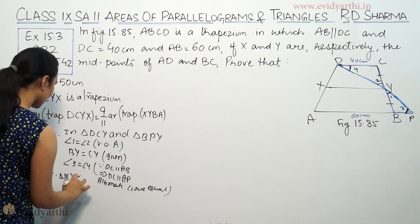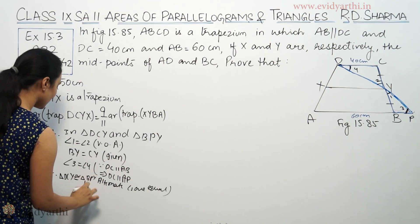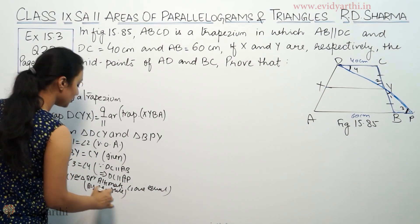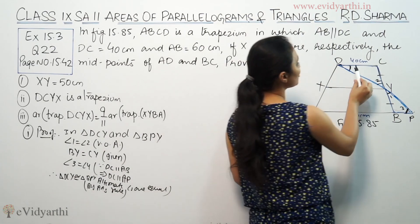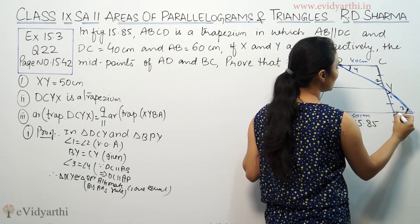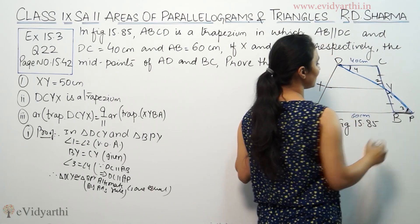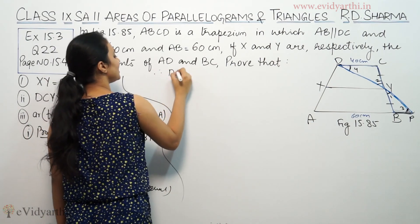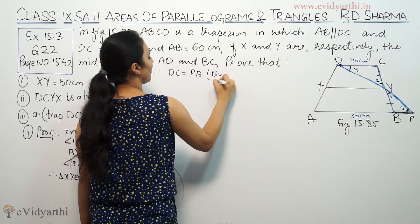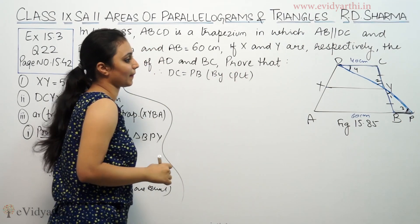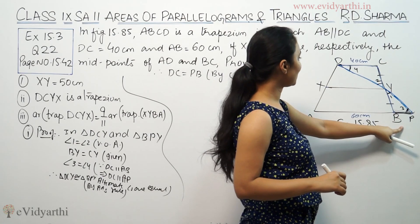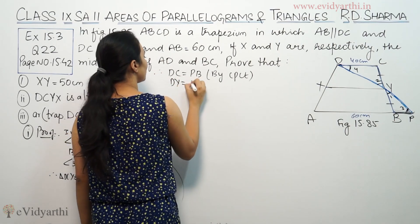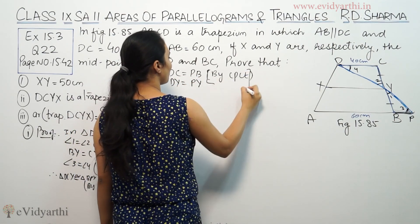Triangle BCY is congruent to triangle BPY by Angle-Angle-Side (AAS). Therefore we can say that DC equals DP, and DC equals PB by CPCT. Also DY equals PY.